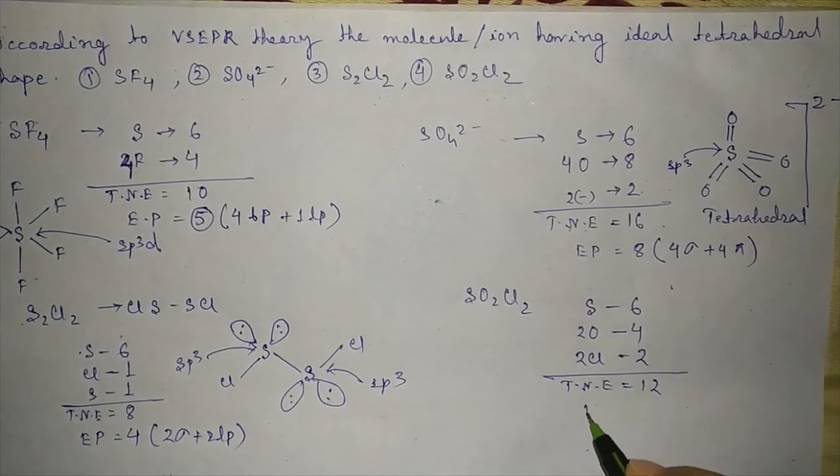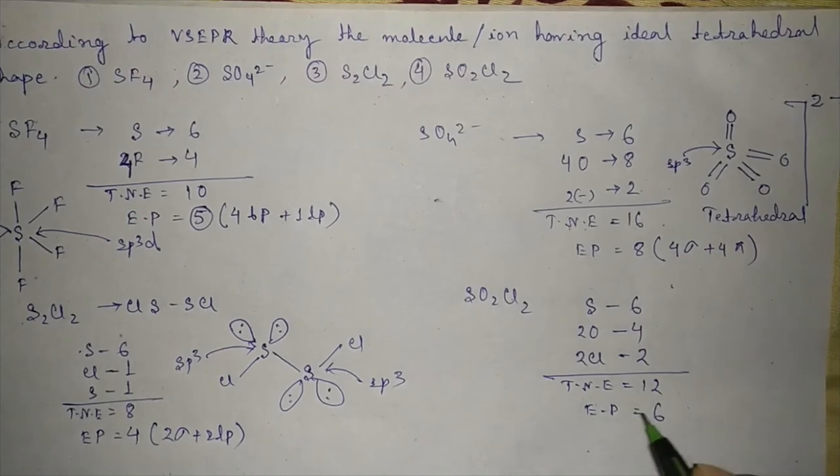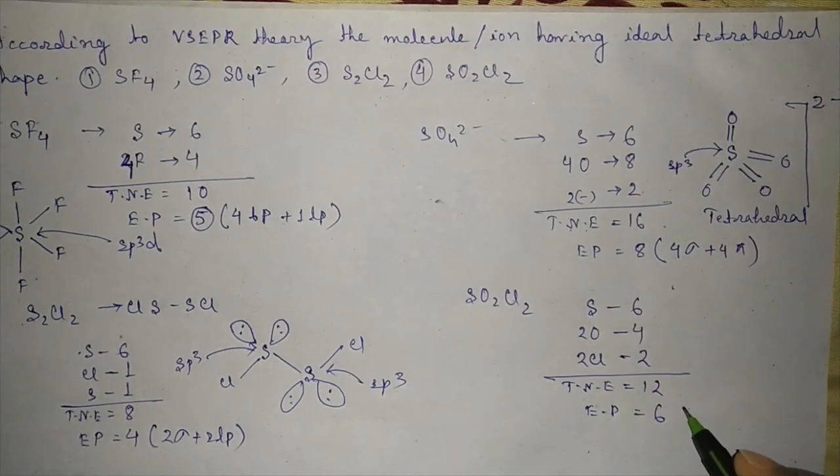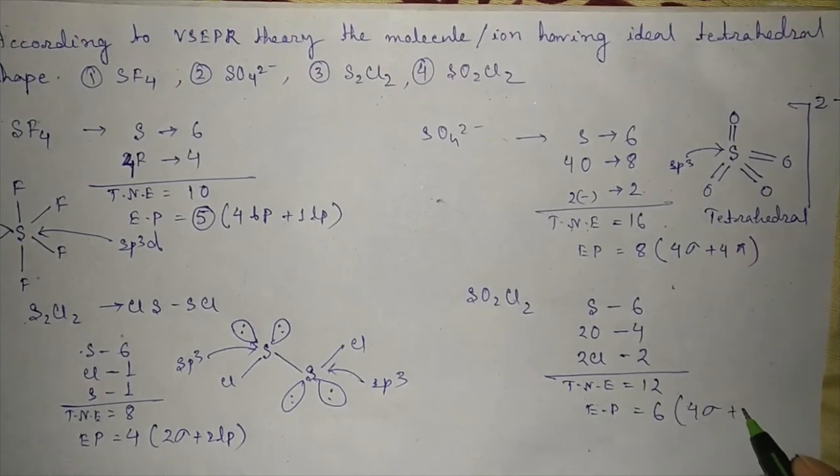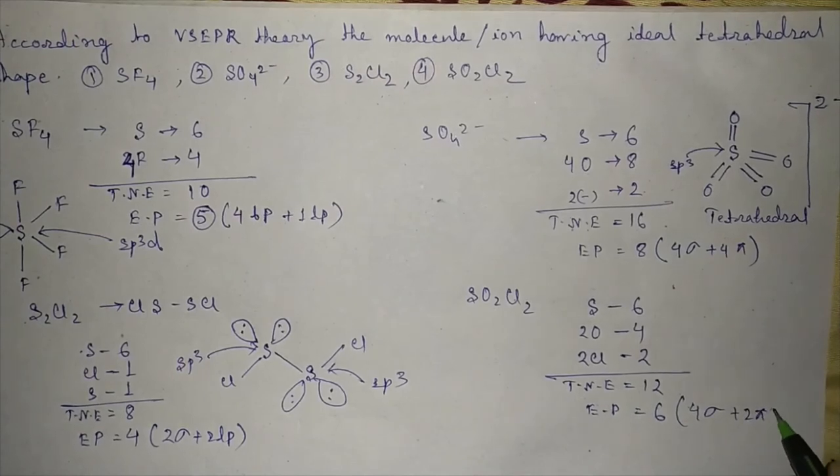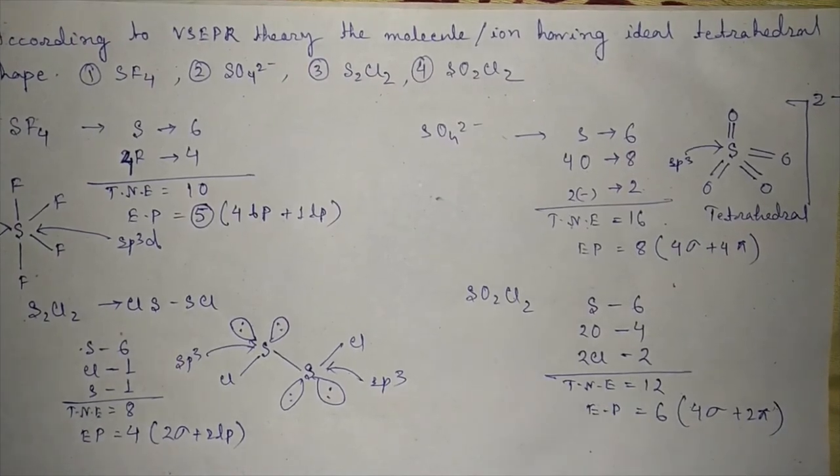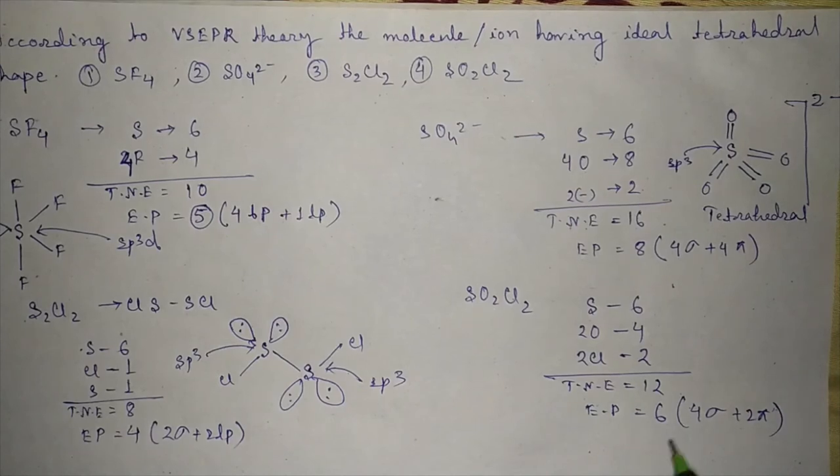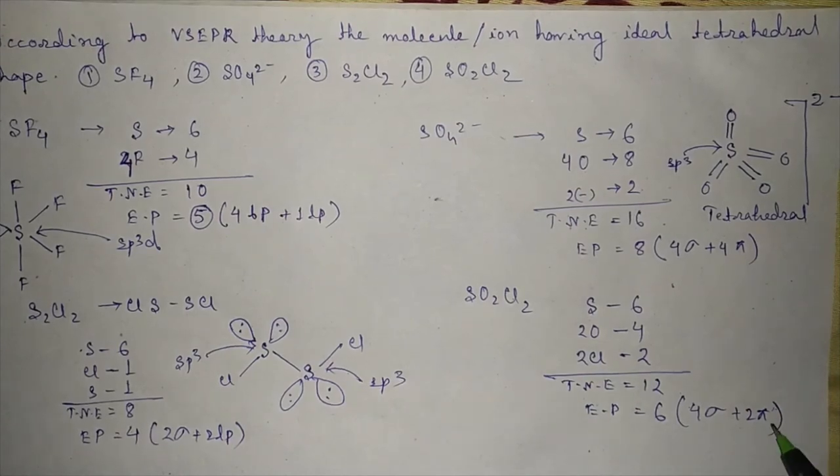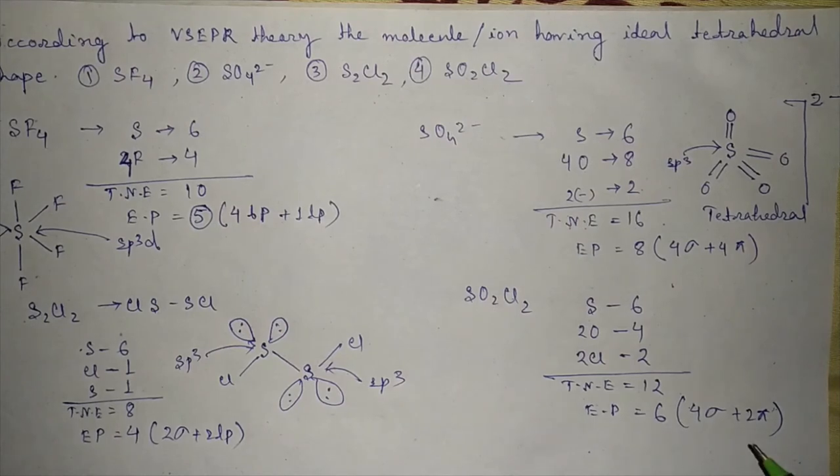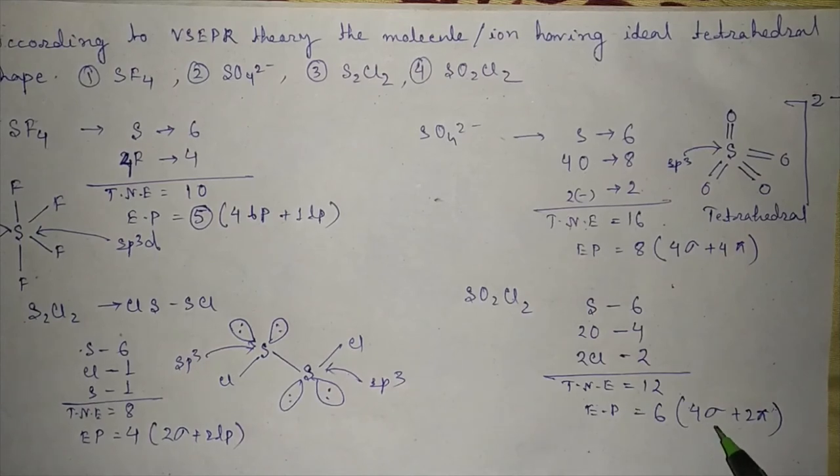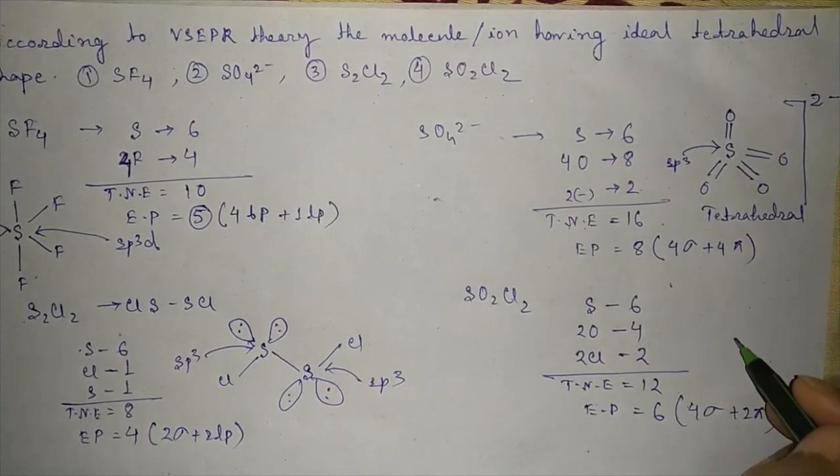Electron pairs equal to 6. So we have 4 sigma plus 2 pi. 2 pi is for 2 oxygens, as pi bonds do not contribute to determine the geometry. So its structure will be for this 4 sigma, so the hybridization will be sp3.